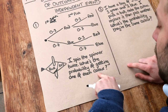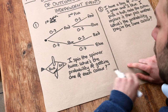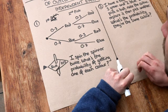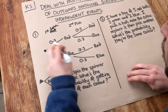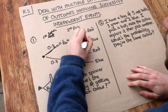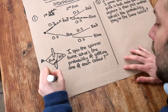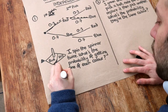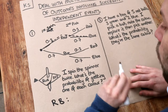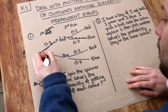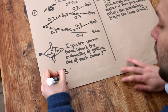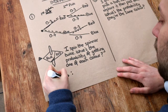I spin the spinner twice — what's the probability of getting one of each colour? Well, let's think about the different possible sequences of outcomes where we'd have one of each colour. We could have a red spin followed by a blue spin — that would be one of each colour. Or it could have been a blue spin followed by a red spin — that would also be one of each colour.